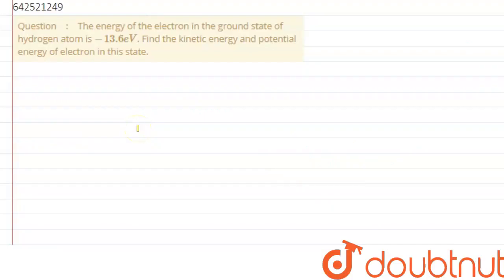Hi everyone, we are given a question which says the energy of an electron in the ground state of hydrogen atom is minus 13.6 electron volts. We need to find the kinetic energy and the potential energy of electron in this state.